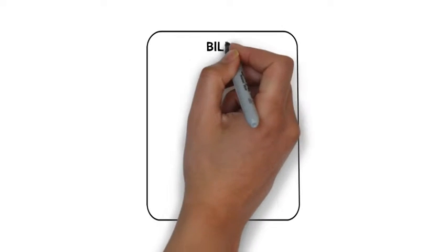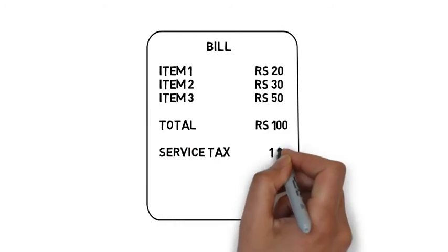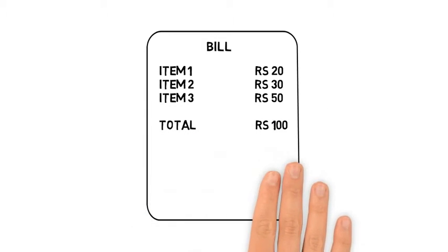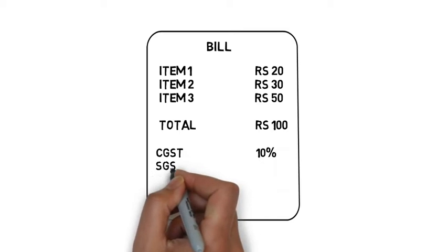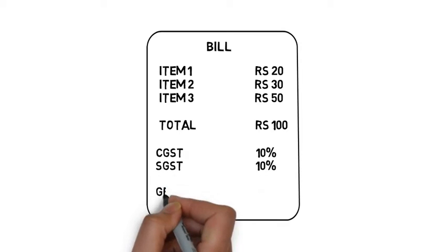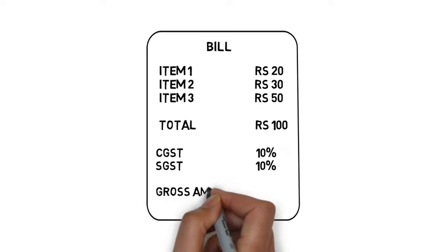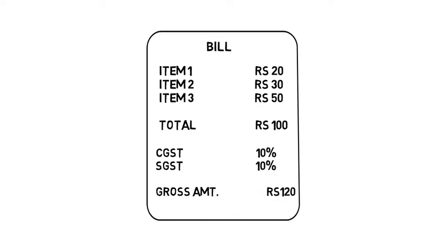Once GST will be executed, your bill will look like this. If 20% GST is charged on the total amount, 10% will be collected by center under central GST and 10% will be collected by respective state under state GST.